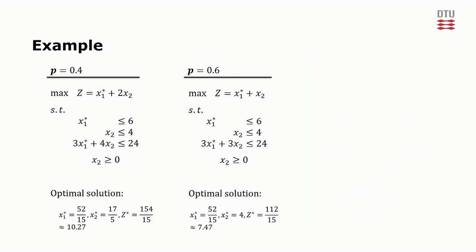We use this result to determine EEV. x1 is fixed to 52 over 15 in each of the two scenarios. The resulting objective values are 154 over 15 and 112 over 15 respectively. This leads to an average solution value of approximately 8.59.